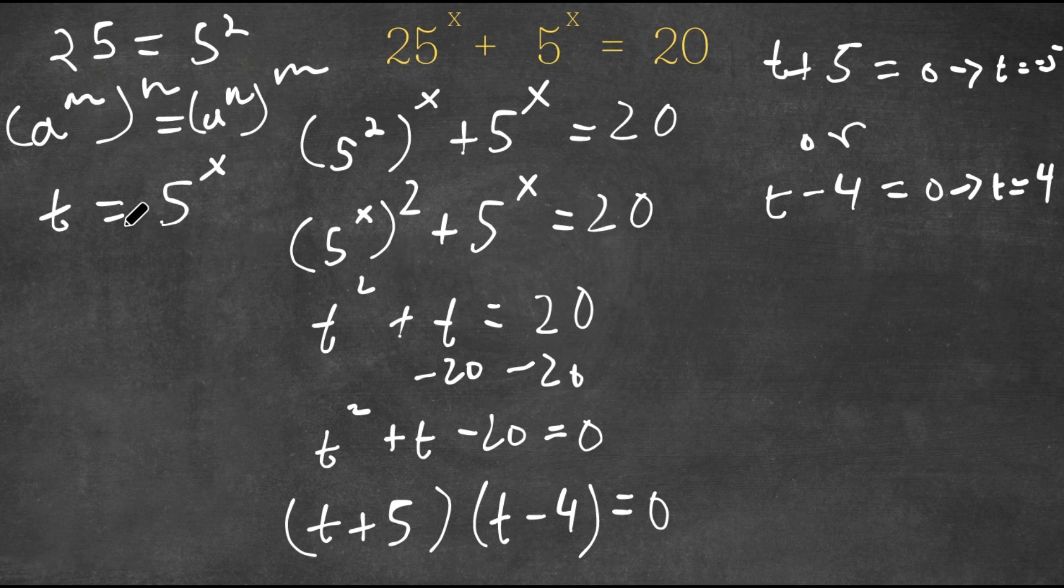So now remember, we set t equal to 5 to the power of x. So let's first try the value t equals negative 5. So if t equals negative 5, then I have negative 5 is equal to 5 to the power of x. And this can actually not be solved.